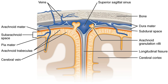The dura has four areas of enfolding. Falx cerebri, the largest, sickle-shaped, separates the cerebral hemispheres. It starts from the frontal crest of the frontal bone and the crista galli, running to the internal occipital protuberance. Tentorium cerebelli, the second-largest, crescent-shaped, separates the occipital lobes from the cerebellum. The falx cerebri attaches to it, giving a tent-like appearance.